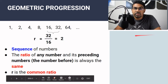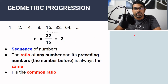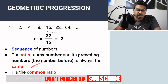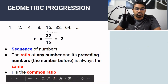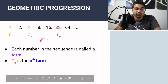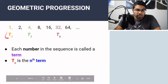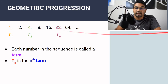In arithmetic progression we have common difference D, where the difference between any two consecutive terms is always the same. But in geometric progression we have the common ratio. TN represents the nth term — T1 is the first term, T3 is the third term, and T6 is the sixth term.